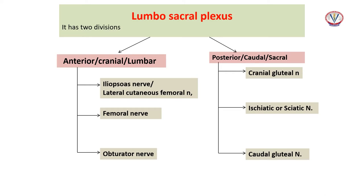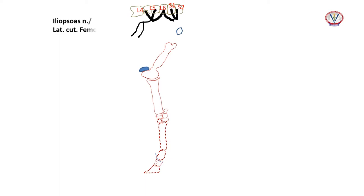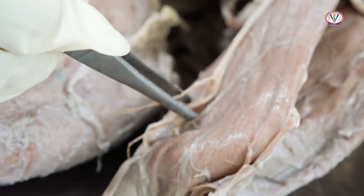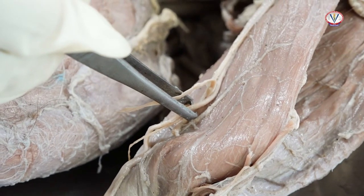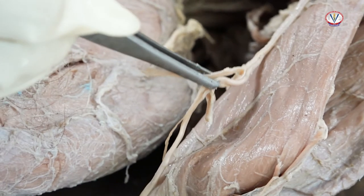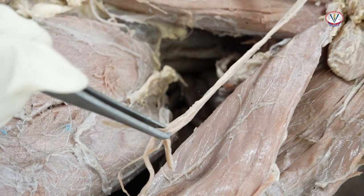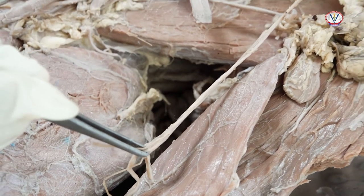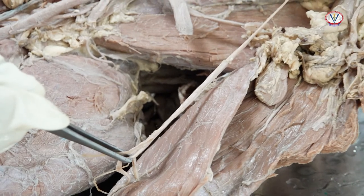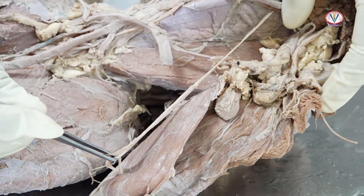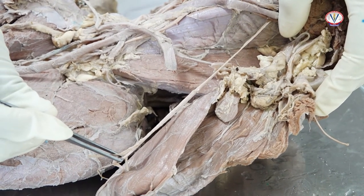The lumbar plexus gives off three named branches: the iliopsoas nerve, the lateral cutaneous femoral nerve, and the femoral nerve and obturator nerve. The fibers of the iliopsoas nerve or lateral cutaneous femoral nerve are derived from the fourth lumbar and occasionally from the third and fifth lumbar spinal nerves; they pass cranially towards the cranial aspect of the tuber coxae, innervate the psoas and iliacus muscles, and ramify to the skin.